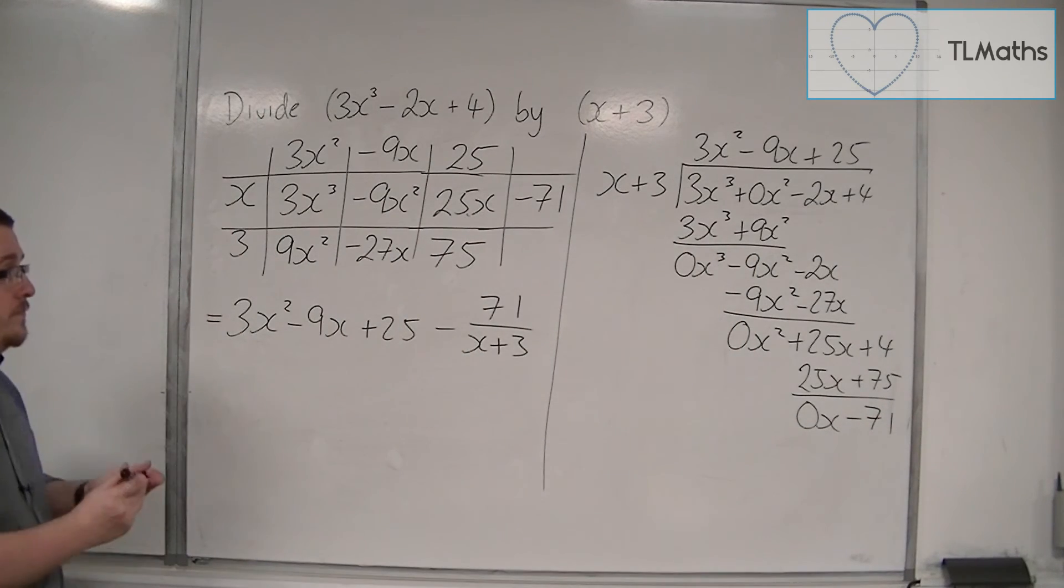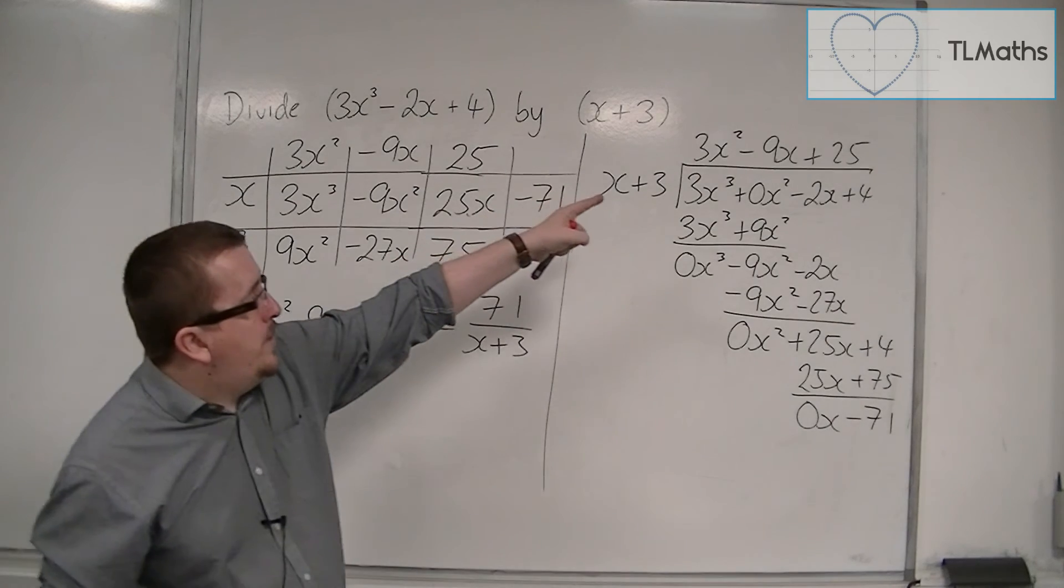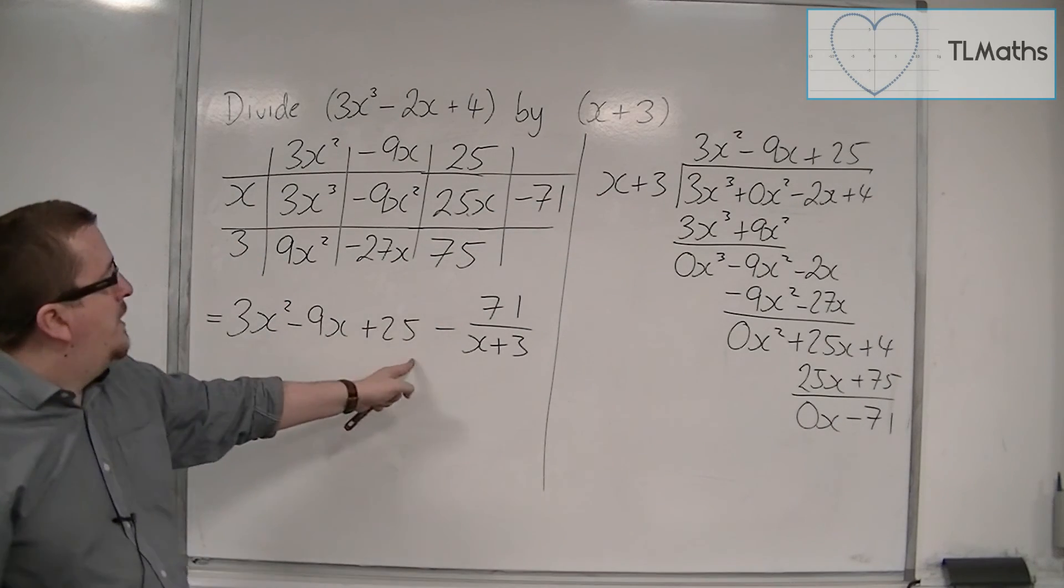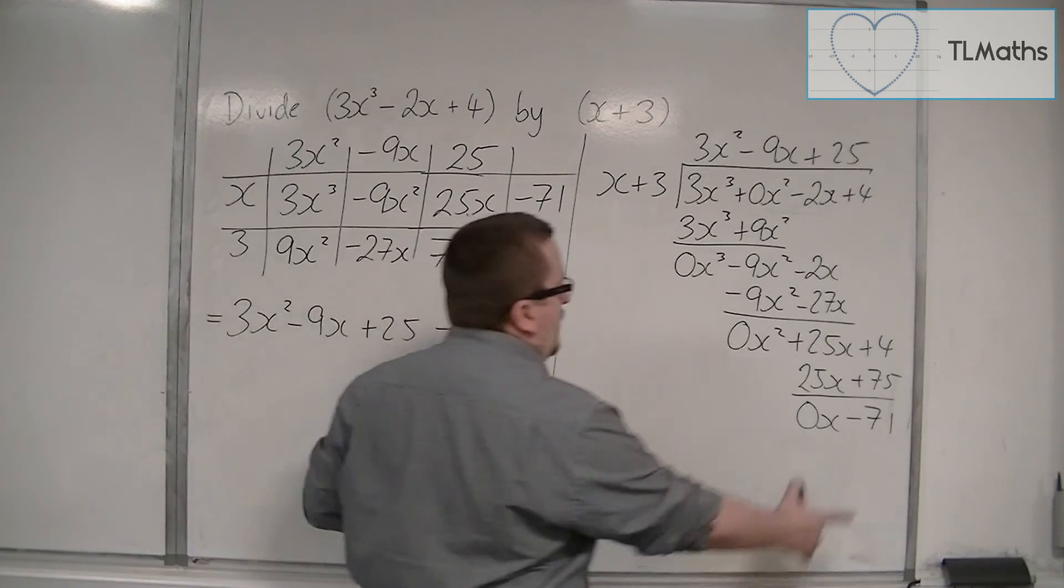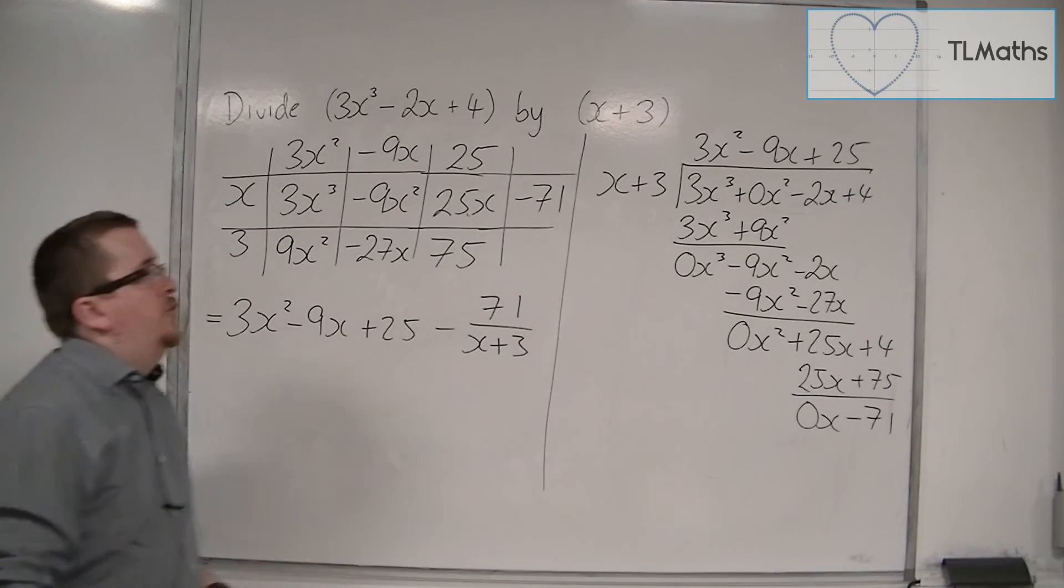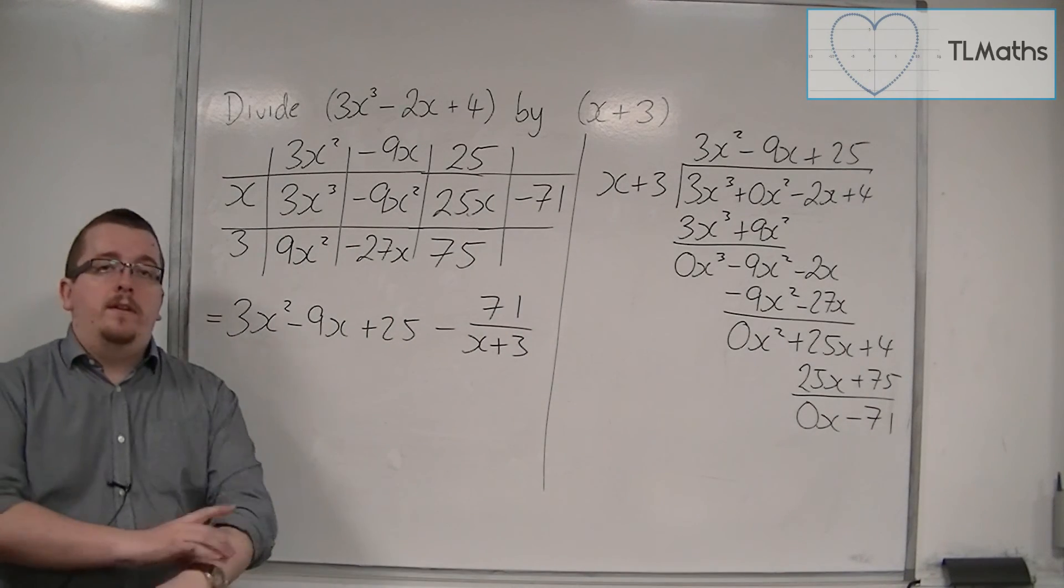And what I get is what is on the top line: 3x squared minus 9x plus 25. And I've got a remainder of minus 71, which I can put over the x plus 3.